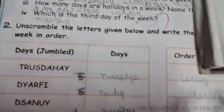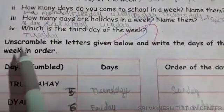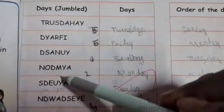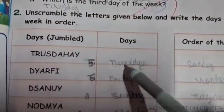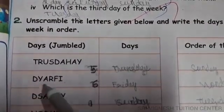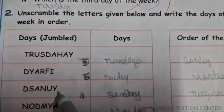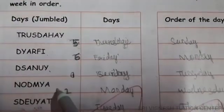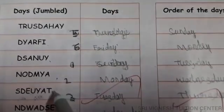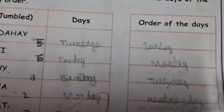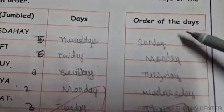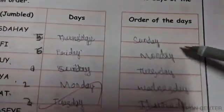Next: Unscramble the letters given below and write the days of the week in order. The days are jumbled. If you read the days correctly in order: Sunday, Monday, Tuesday, Wednesday, Thursday, Friday, and Saturday.